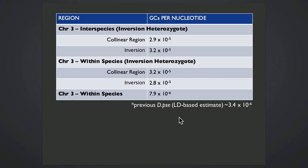And to give you an idea of the gene conversion rates per nucleotide that I'm observing along this chromosome, here are some numbers. In both the inversion heterozygotes shown here, the interspecies and the within-species inversion heterozygote, I'm seeing a gene conversion rate of about 3 times 10 to the negative 5 using those maximum tract lengths that I mentioned. And this number is really similar between inverted and collinear regions, which is really cool. And it's also about 10 times higher than a previous LD-based estimate from just pseudoobscura.